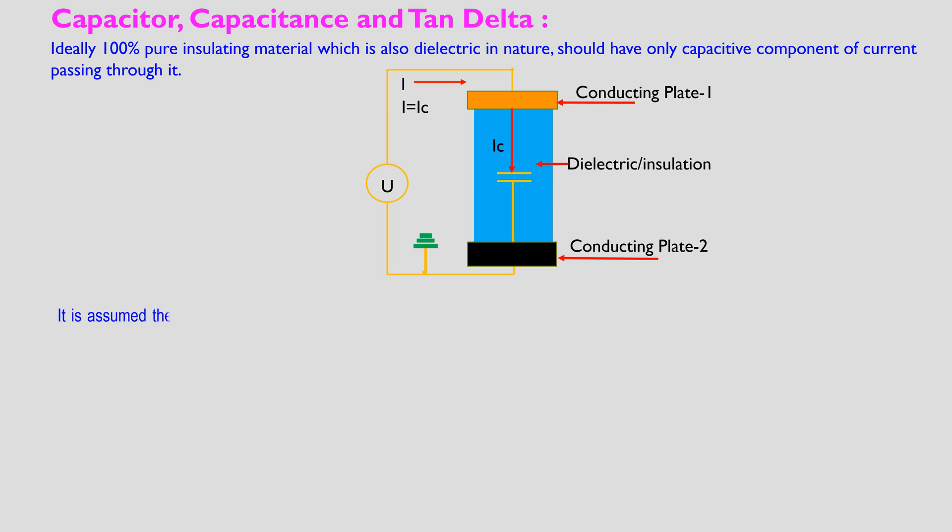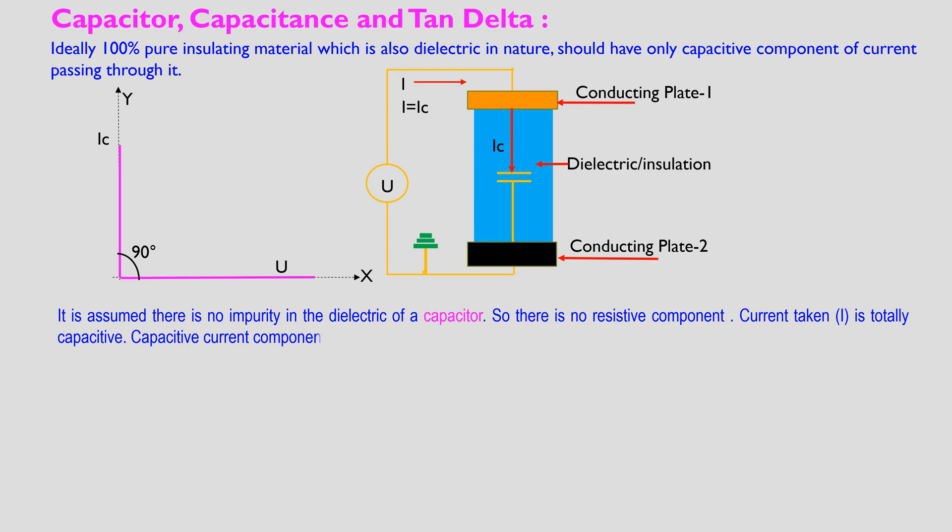It is assumed there are no impurities in the dielectric of a capacitor, so there is no resistive component. Current taken I is totally capacitive. Current component Ic leads the voltage U by an angle of 90 degrees.